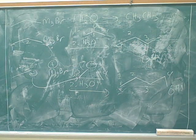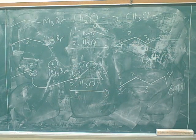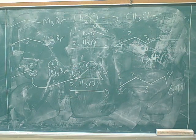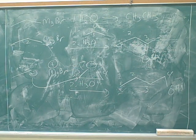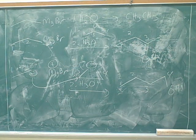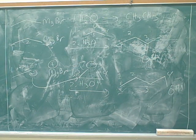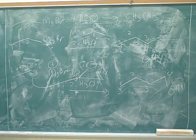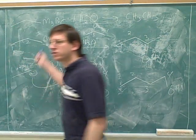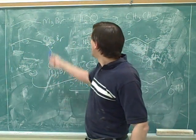What do Grignards do? Grignards attack carbonyls or epoxides. A Grignard can attack a carbonyl or an epoxide — that's on the left of the handout. Alkyl lithiums can do the same thing: attack a carbonyl or an epoxide. The other thing that Grignards can do is deprotonate oxygens, nitrogens, and sulfurs — deprotonate electronegative atoms.